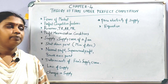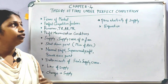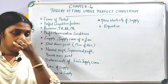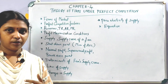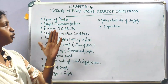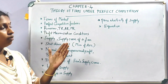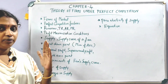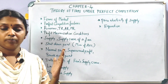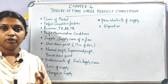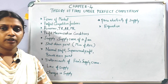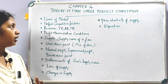In the fourth chapter, we have the Theory of Firms under Perfect Competition. Here we learn different forms of market: perfect competition, monopolistic competition, monopoly, and oligopoly — these are the different types of markets.